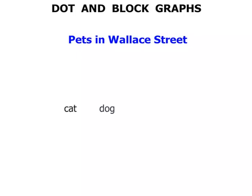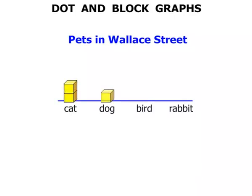Pets in Wallace Street. We're going to have a look at a block graph, because we're dealing with pets. We expect to see some names of pets, and the block graph has a series of blocks. You can see how we're building this up.